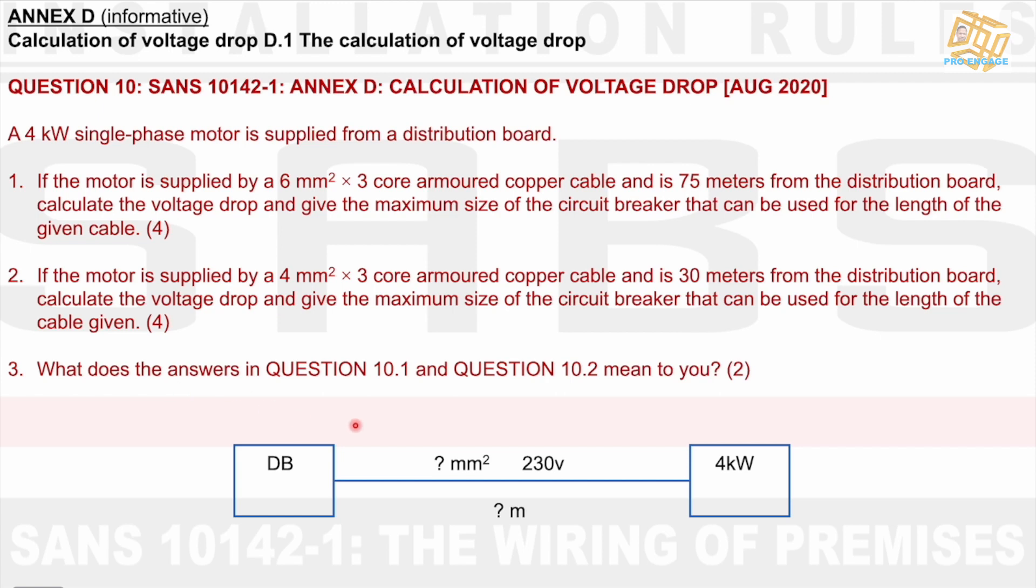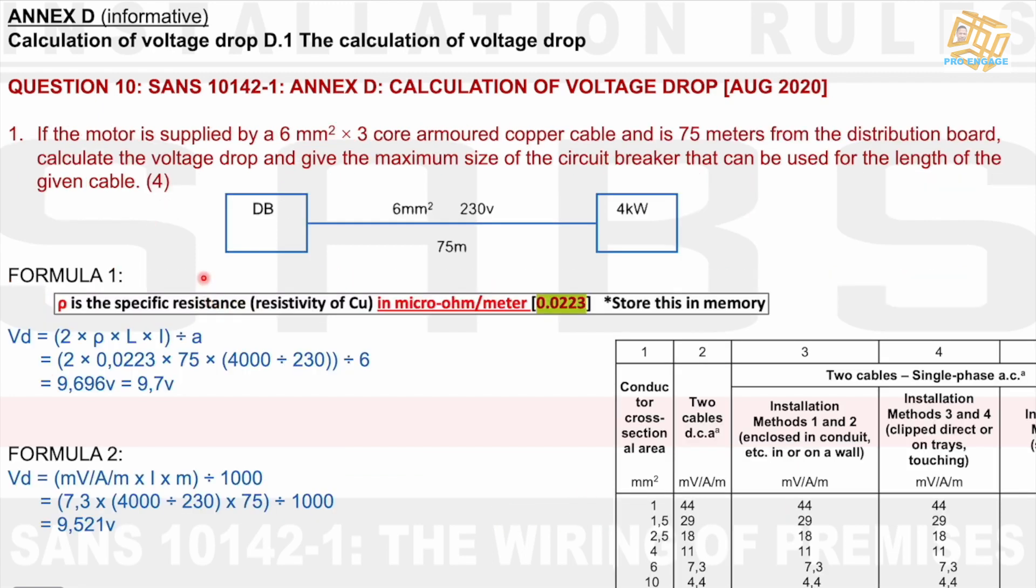So we're going to have to assume here when we get our answers. So this is possibly what we're looking at: DB, a load and then changed distances. In one instance, 6 mil and 75 meters and in another instance, 4 millimeters squared and 30 meters with a supply of 230 volts. Question one, if the motor is supplied by 6 mil and the distance is 75 meters, the load is 4 kilowatt. Then calculate the VD and the size of the circuit breaker.